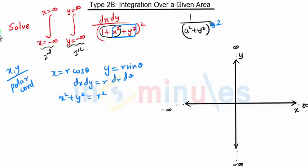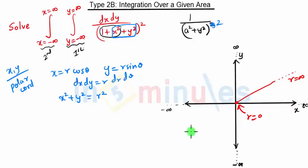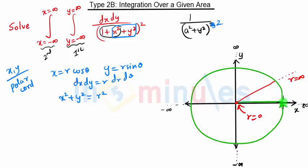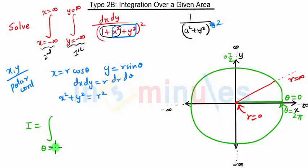Here y is going from minus infinity to infinity, so we have to cover this entire plane. In polar coordinates, we consider a radial distance — one strip from the origin where r = 0, going till infinity, so r goes from 0 to infinity. To cover the entire plane, we rotate this strip from one side all the way around. So theta goes from 0, to π/2, and completing one full rotation, θ = 2π.